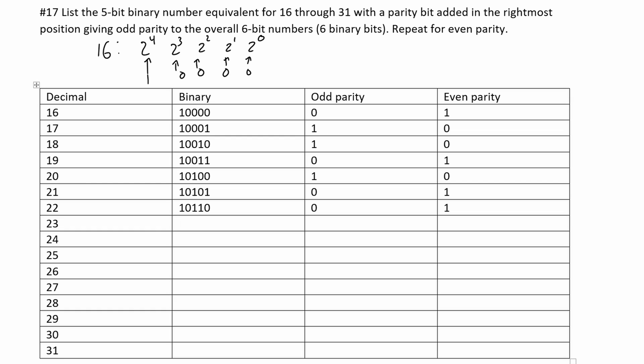For 23, it's just going to be 22 plus 1, so we're going to have 1 0 1 1 1. We have an even number of ones, so we're going to have a 1 for our odd parity and a 0 for our even parity.